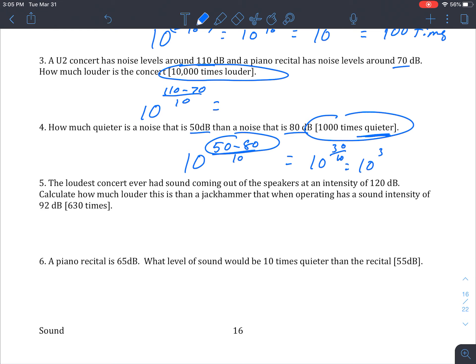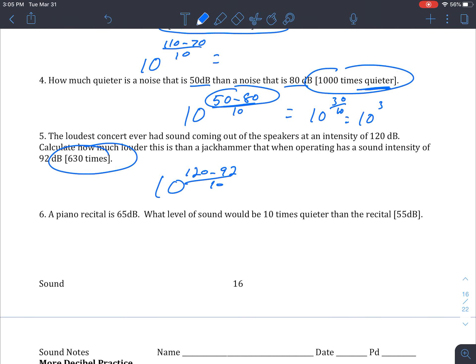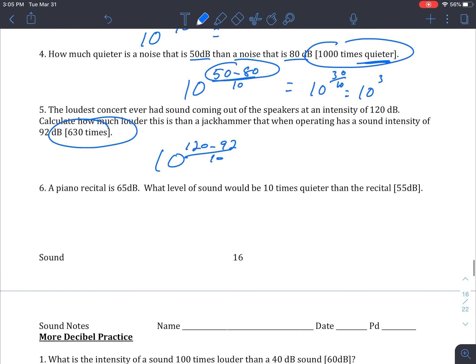Five, another rock concert. And you should be able to start seeing patterns here, whether you're going from decibels to watts per meter squared, or vice versa, or comparing loudnesses, or another way to say that, intensities. So that should be able to get you 630 times, and the only reason why that's a little bit of a weird number is because we're not going in order of 10, so we have the 92 and the 120. It's not going to give us a multiple of 10.